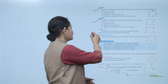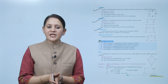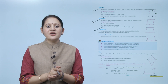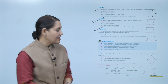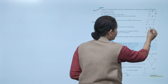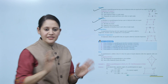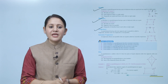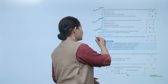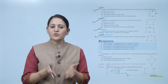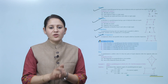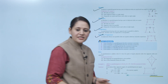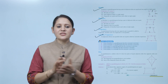Next is trapezium. A quadrilateral having only one pair of opposite sides parallel is called a trapezium. The other pair of sides is non-parallel — PQ and SR are parallel, while PS and QR are not parallel. Next is isosceles trapezium: a trapezium whose non-parallel sides are equal is called an isosceles trapezium. Here, AD and BC are the non-parallel sides and they are equal.